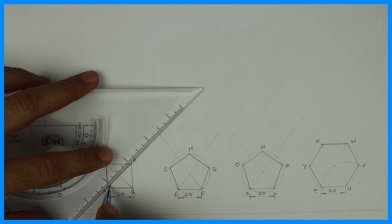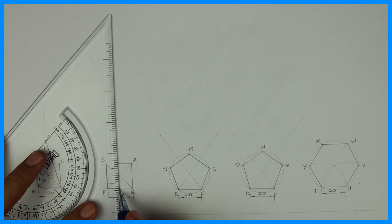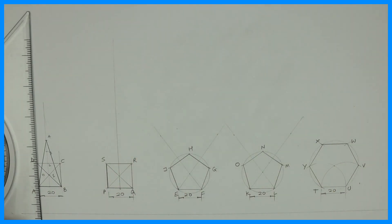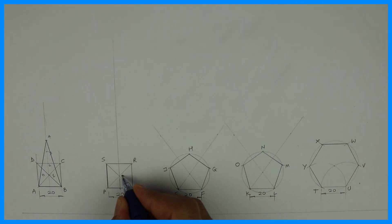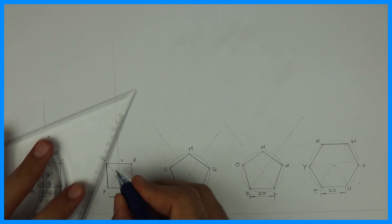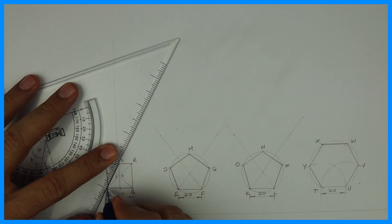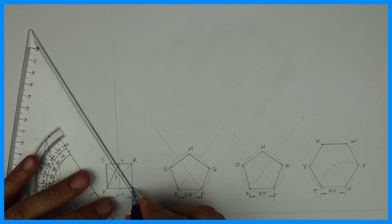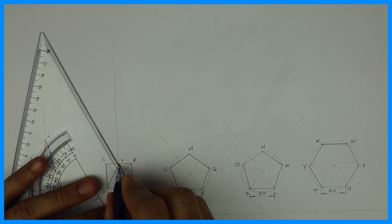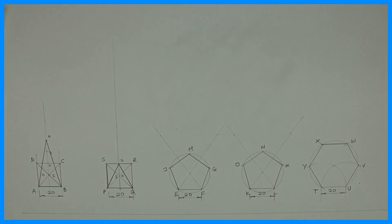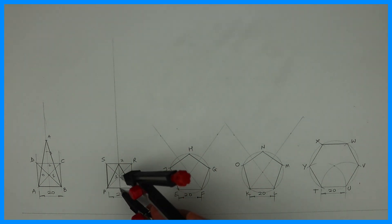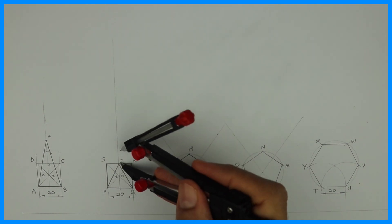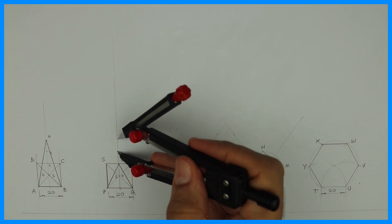Now we'll see another square. In that also we'll draw the diagonal and draw the height. We count: one, two. If I want half the height, then I'll take only two times. So what I'm doing is keeping the base the same and playing with the height. If I want equal area, I take four times.